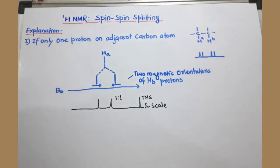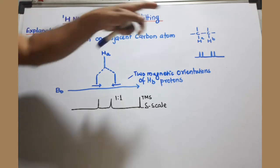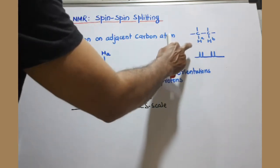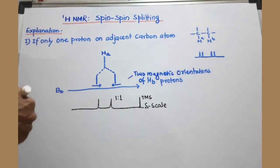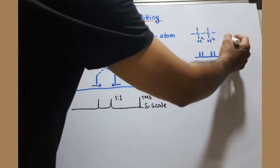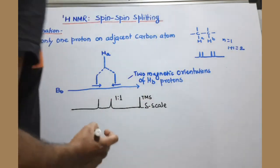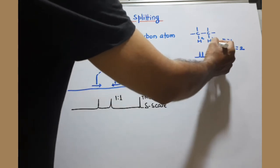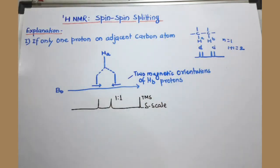Now we will see the explanation for why this splitting is occurring. First, we consider only one proton on an adjacent carbon — a situation where there is one proton on an adjacent carbon which is non-equivalent. By applying our simple rule, if one adjacent proton is non-equivalent, then N value is 1. Putting this value: 1 plus 1 equals 2, so we get a doublet for each proton — two doublets, as per the rules previously discussed.